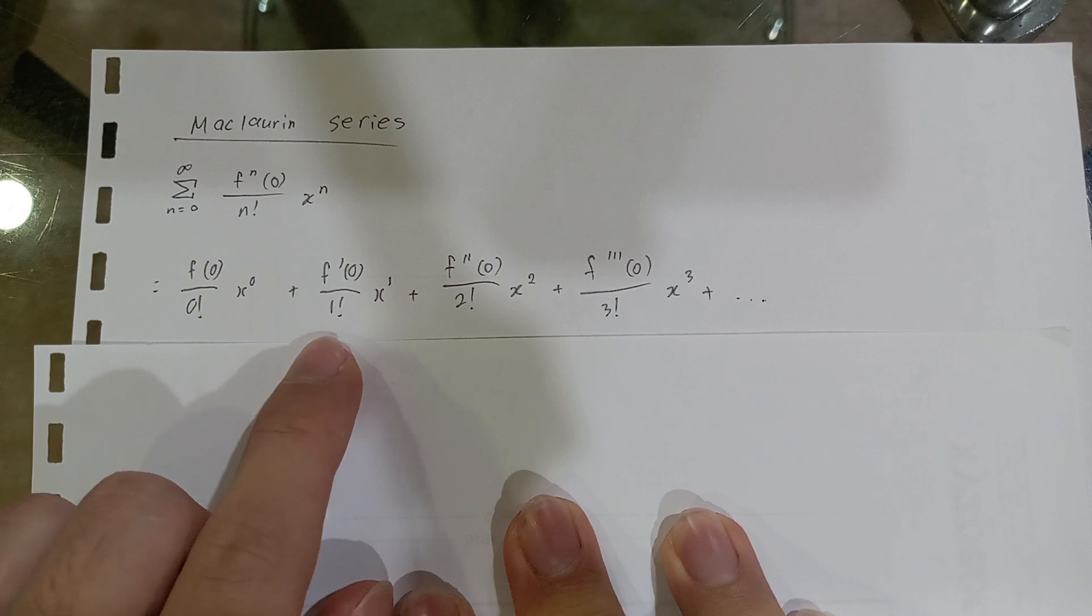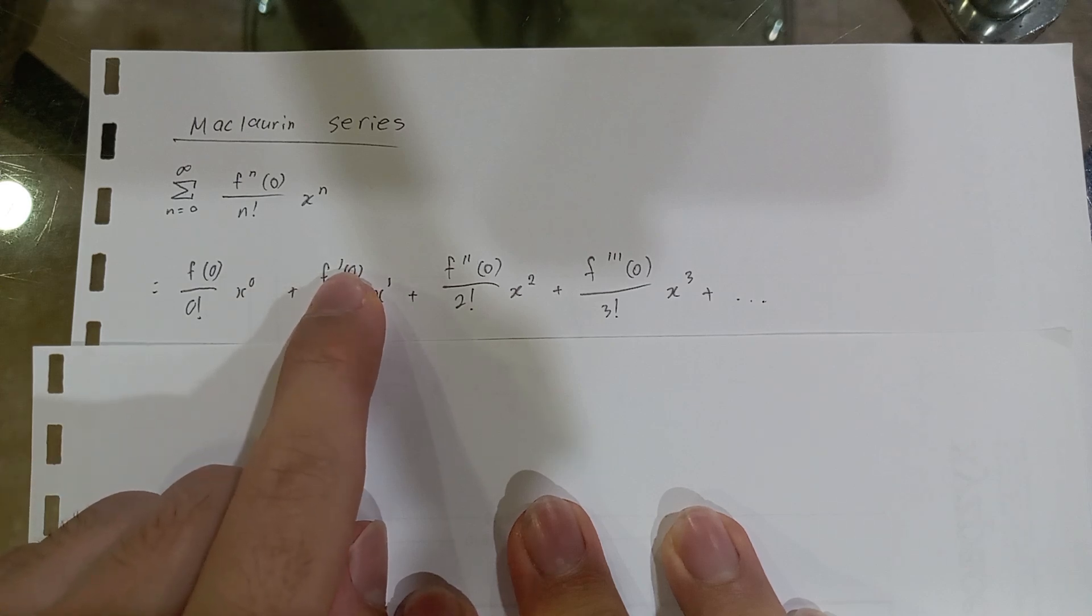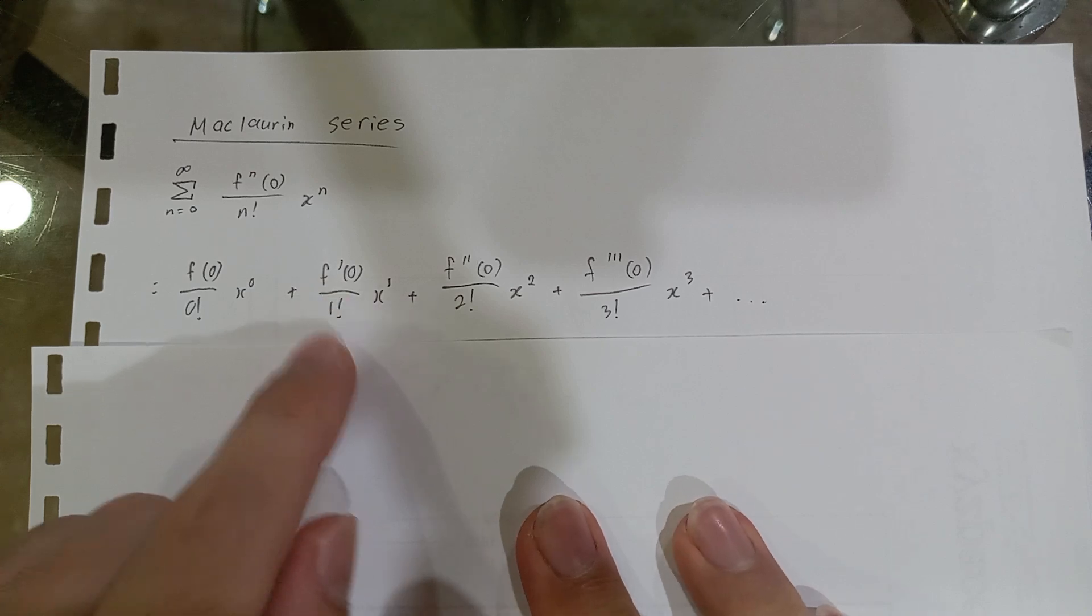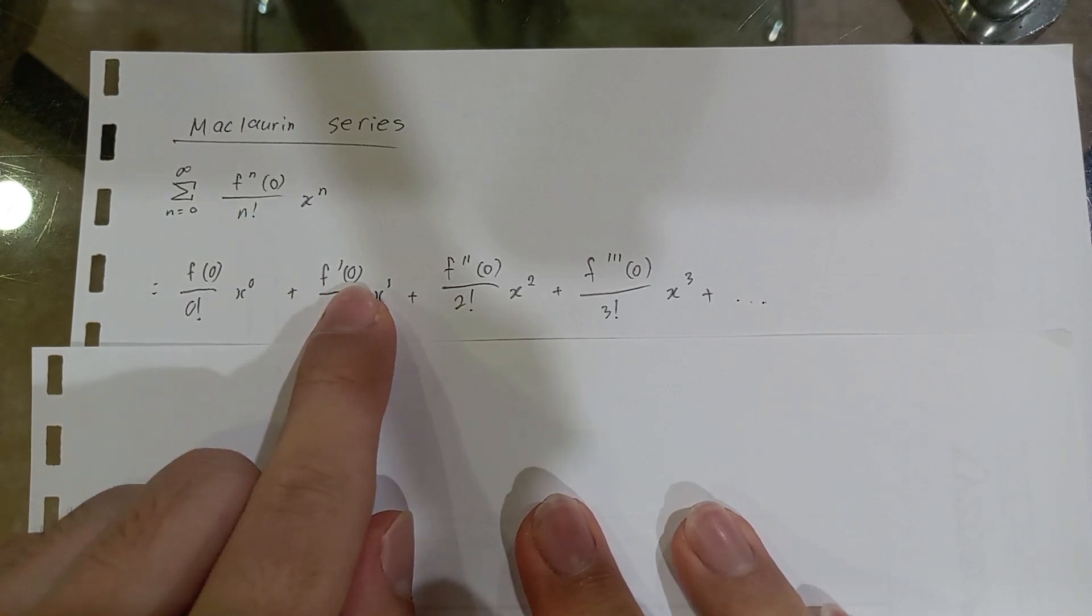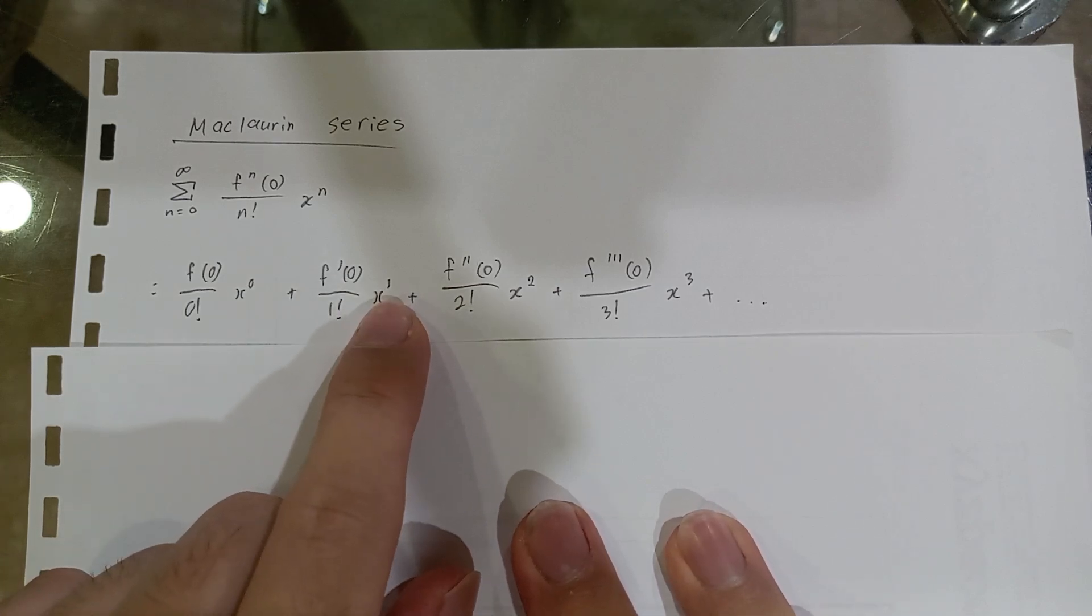For the second term where n equals 1, you have f apostrophe (this apostrophe means it's the first derivative of f) at 0, divided by 1 factorial, times x to the power of 1.